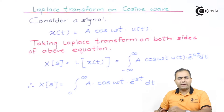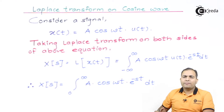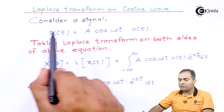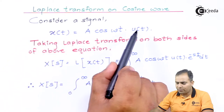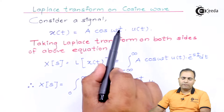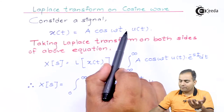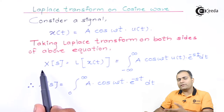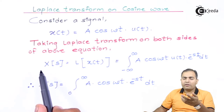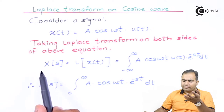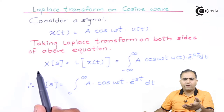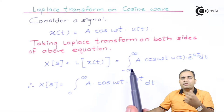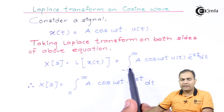I have multiplied my function — the cos function — by the unit step. So my signal is x(t) = A·cos(ωt)·u(t). We know the definition of Laplace transform: x(s) is the integral of x(t) times e to the power of minus st, integrated with respect to time t over the range from minus infinity to infinity.